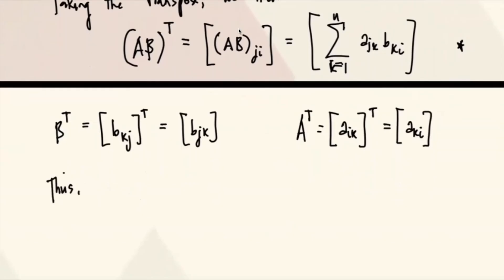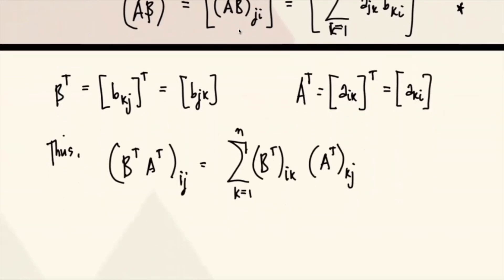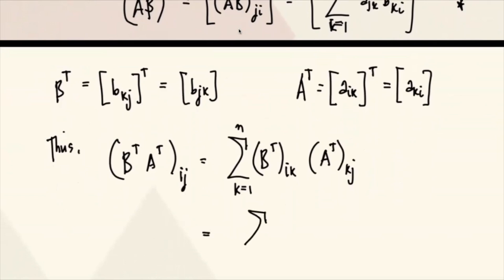This means that our B transpose A transpose, I, J. So that's the same as the sum of B transpose, I, K, K from 1 to N. And this is A transpose, K, J. If you take the sum of that, or if you simplify that one, this is B, K, I, A, J, K. K from 1 to N.